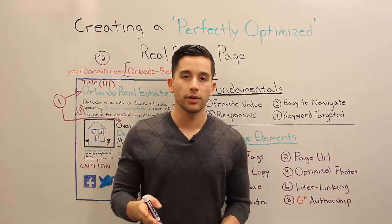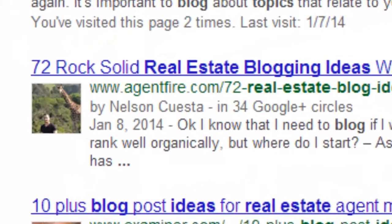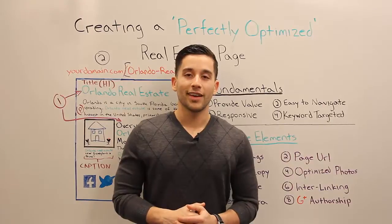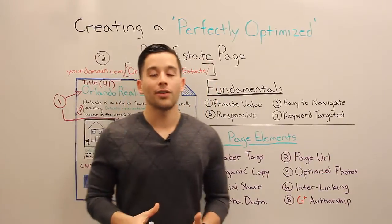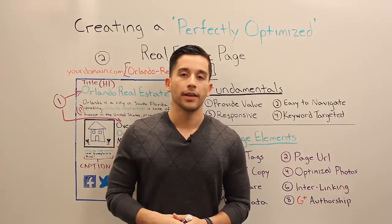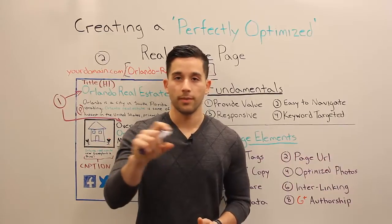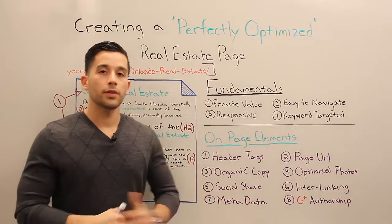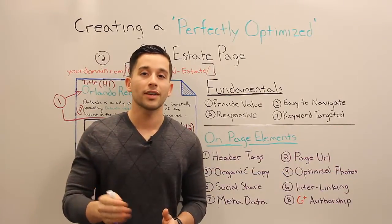Number eight: Google Authorship. If you have a Google+ profile, you've probably seen search results where a person's photo and name appear alongside the listing. If you found this post through a search, you may have seen me standing in South Africa with a giraffe behind me. Google Authorship is not only considered a social indicator — giving Google more reason to trust your content — but it also improves click-through rates. If five articles come up in search results and one has a photo and name attached, that catches attention and drives more clicks. That's it for today — email me at nelson@agentfire.com, follow us, sign up for our newsletter, and thanks for watching.